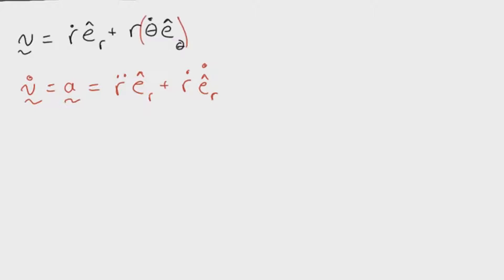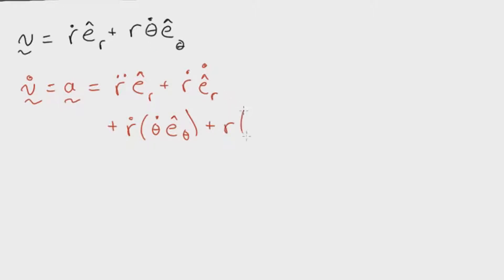Now for the second term, I'll group those together and apply the product rule and chain rule. That gives us plus r_dot times theta_dot times e_theta, and then r times the derivative of those two values, which is theta_double_dot times e_theta plus theta_dot times e_theta_dot.